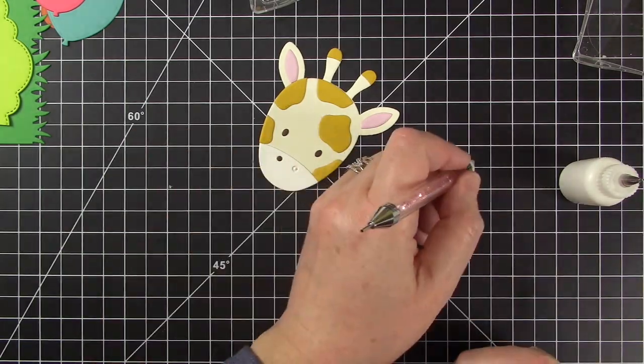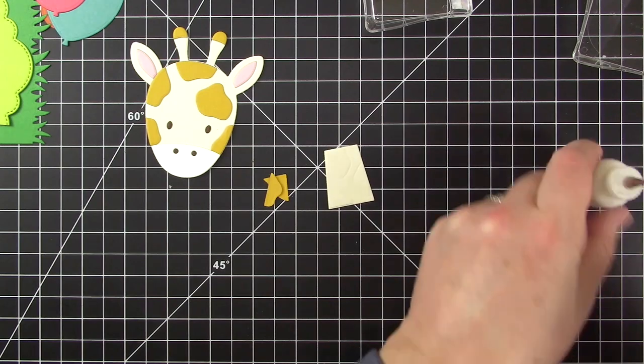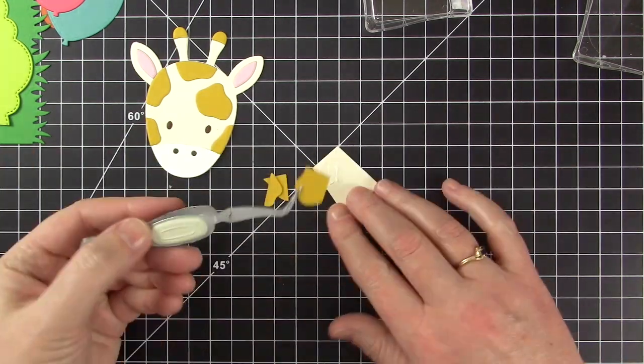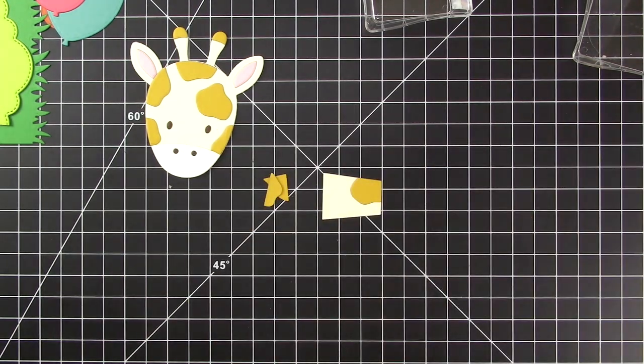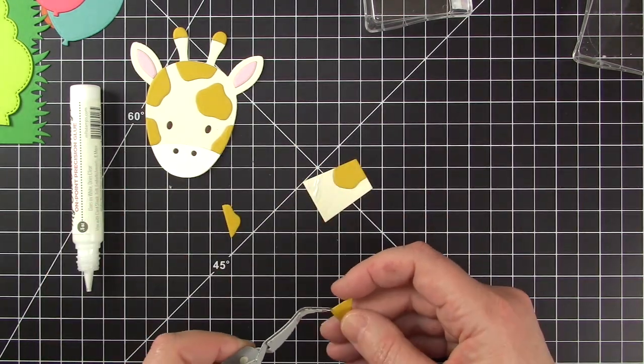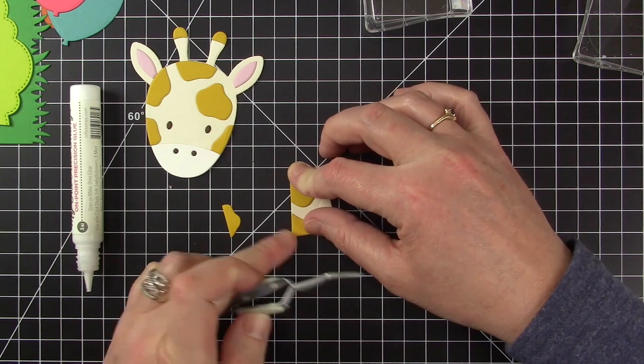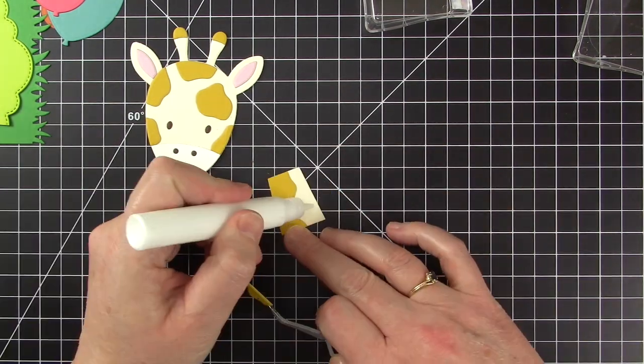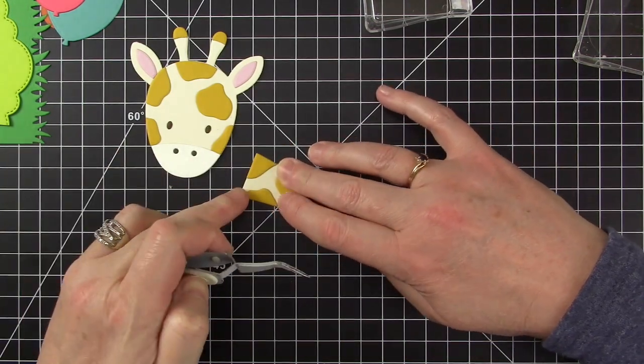I also used a jewel picker upper tool for the little teeny eyes and nostrils and I just touch them to the glue. The glue just grabs them off the tool and then I can move on to the neck and I'm adding the butterscotch spots and then it will be time to move on to the next step.